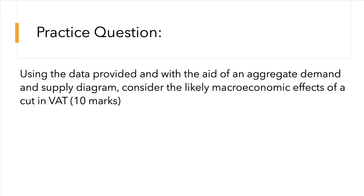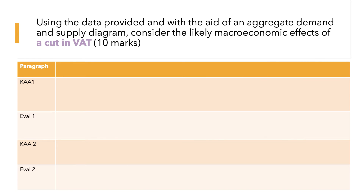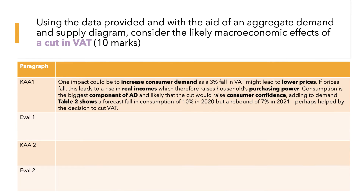Here's the practice question: using the data provided and with the aid of an aggregate demand and supply diagram, consider the likely macroeconomic effects of a cut in VAT. In a 10-mark question, they're looking for two valid KAA points building chains of reasoning and two evaluation points — six KAA marks and four evaluation marks. Break your answer into four separate paragraphs: KAA followed by evaluation, then do the same again.